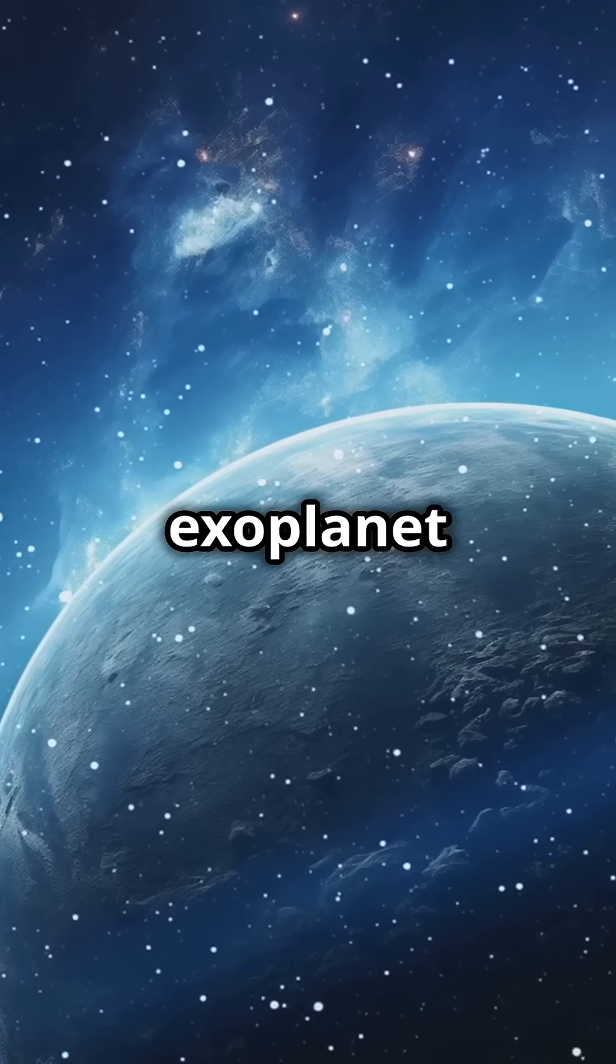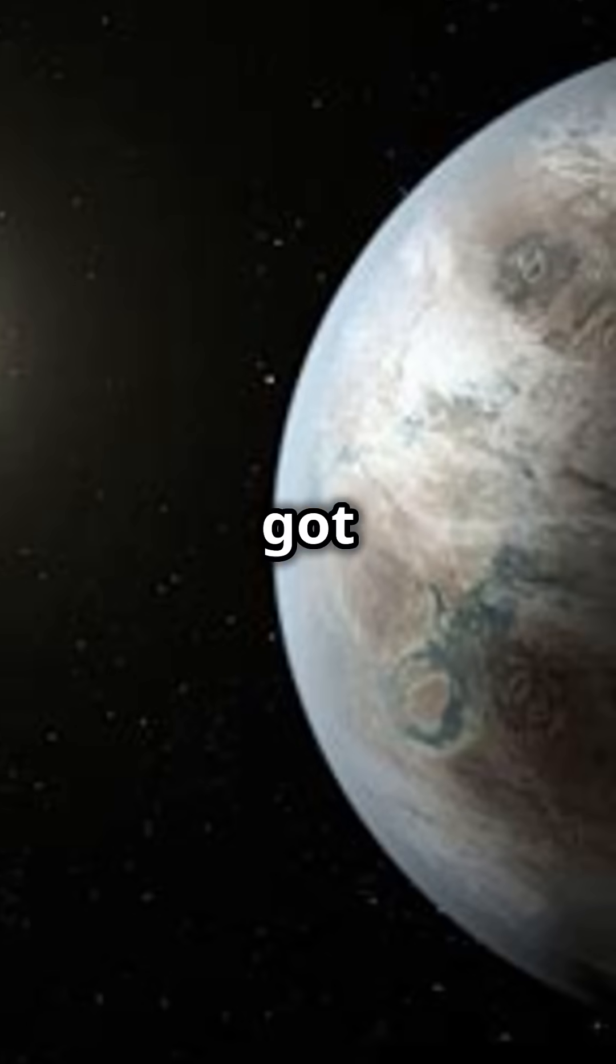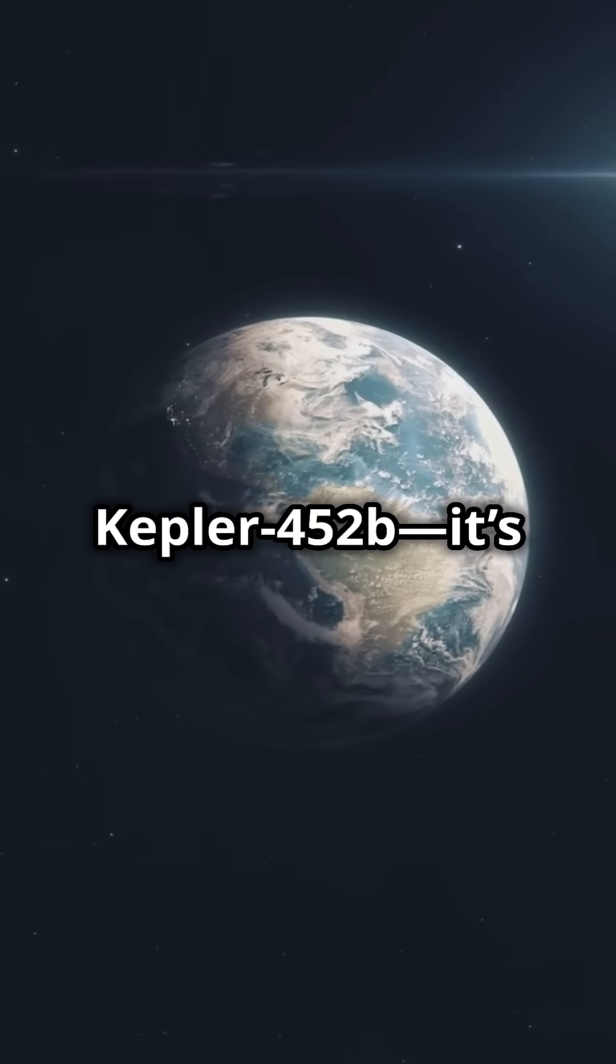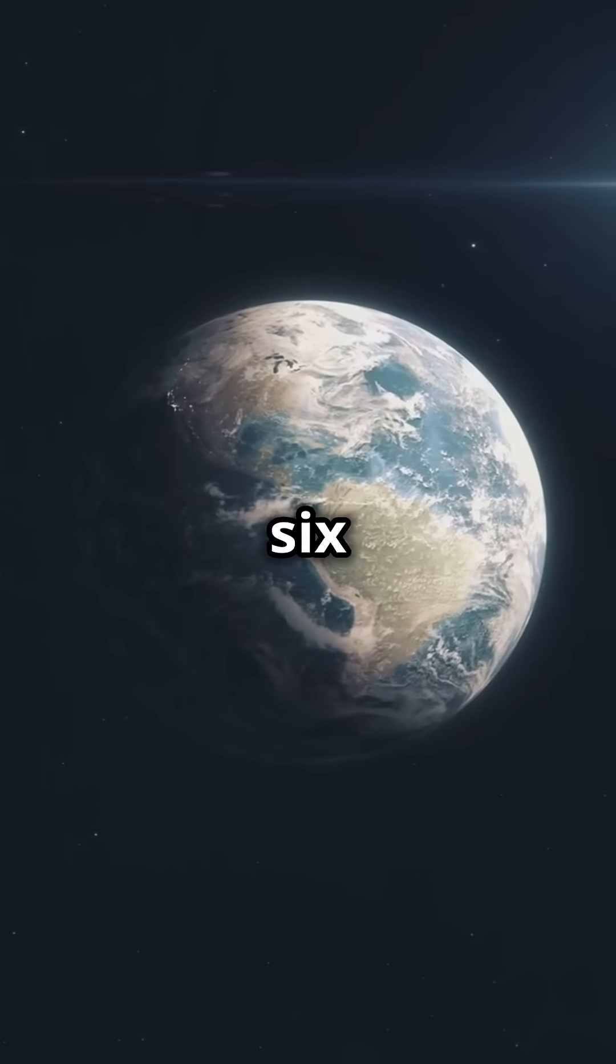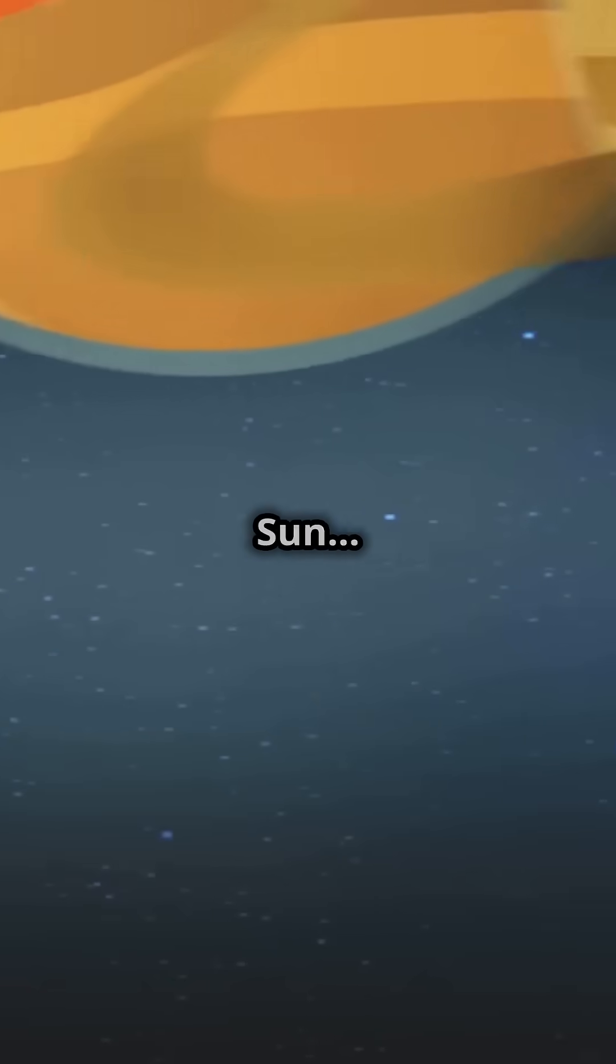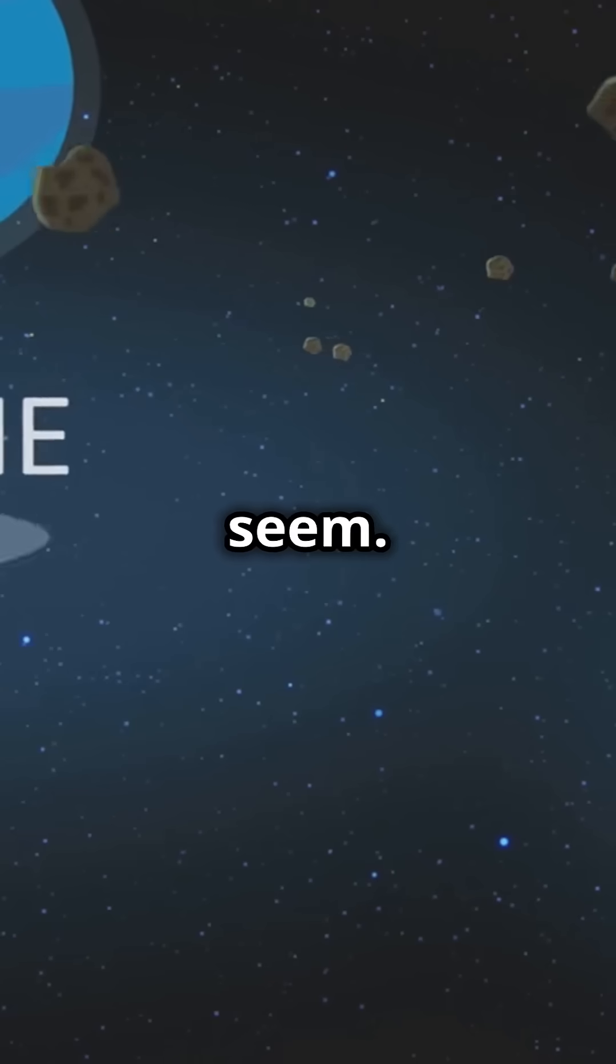We've found it, the best Earth-like exoplanet out there. But it's got four huge problems. Meet Kepler-452b. It's just 1.6 times the size of Earth, orbiting a star very similar to our Sun. But things aren't as perfect as they seem.